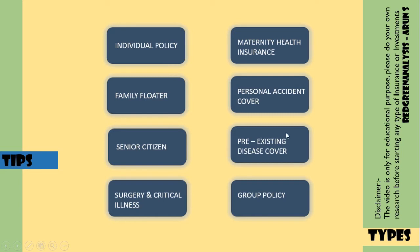Next is pre-existing disease cover. If you already have a health condition before getting insurance, some policies include a pre-existing disease cover. For example, diabetes patients can get a policy, but there are certain restrictions such as a waiting period. After the waiting period, the pre-existing disease can be covered.